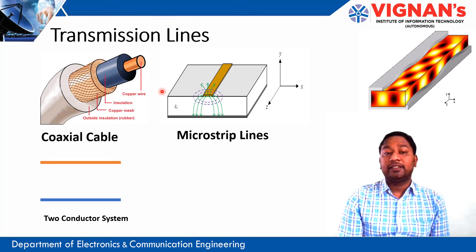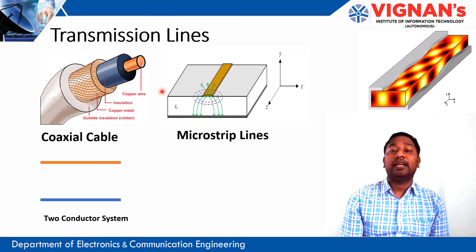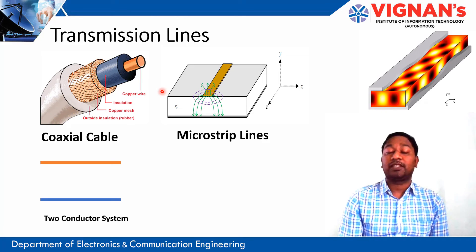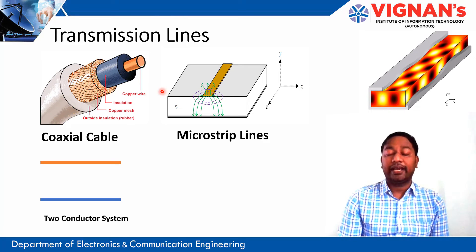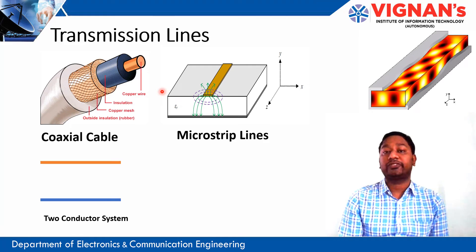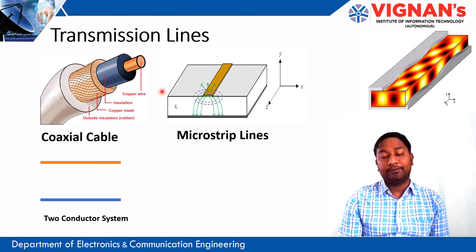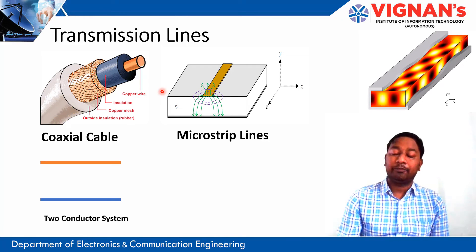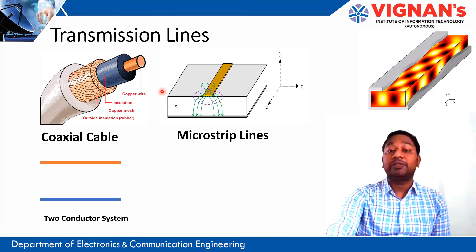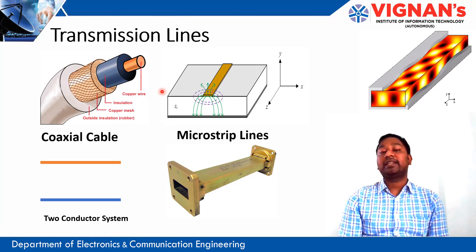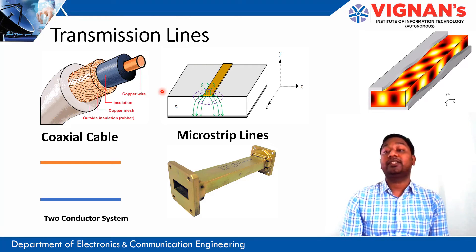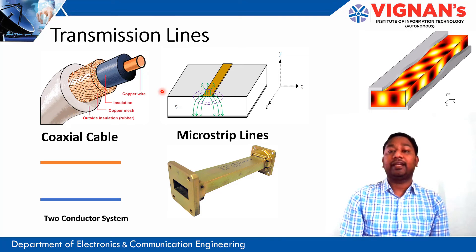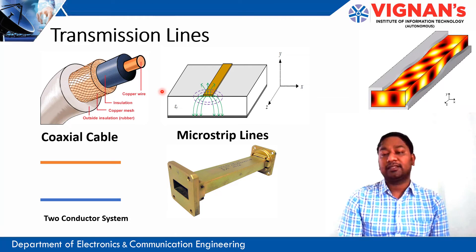At lower frequencies, higher-order modes are not present. But as we go to higher frequencies, additional modes are generated, which affect the overall system performance. There is a specially designed transmission line that can operate from 10 GHz up to 100 GHz, and in some specially designed cases even more.